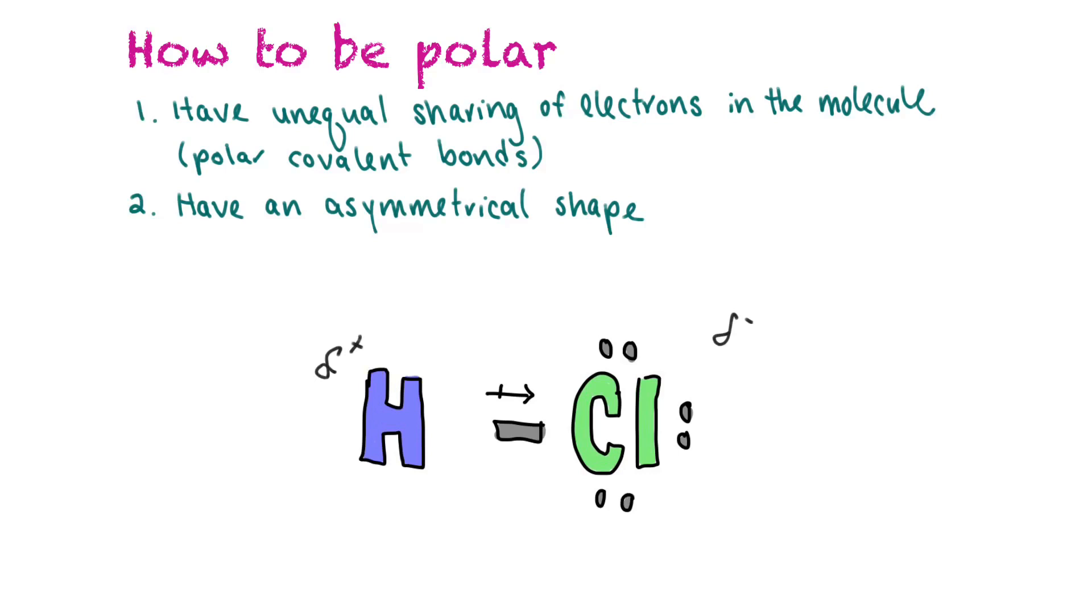So this molecule is partly negative and partly positive, so unequal sharing of electrons. And also it's asymmetrical. You can't fold this molecule in half.